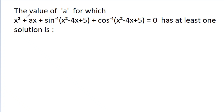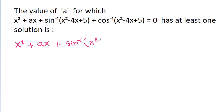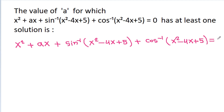In this video, we have to find the value of a for which x² - ax - [sin⁻¹(x² - 4x - 5) - cos⁻¹(x² - 4x - 5)] = 0 has at least one solution. The given equation is x² - ax - sin⁻¹(x² - 4x - 5) - cos⁻¹(x² - 4x - 5) = 0.